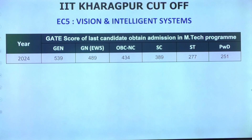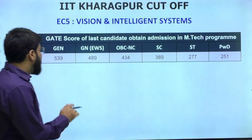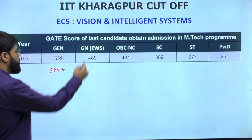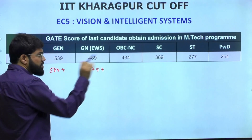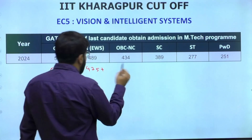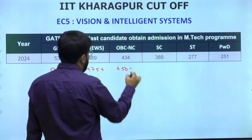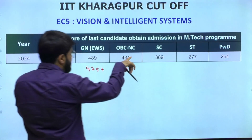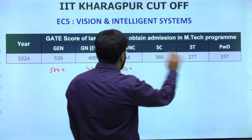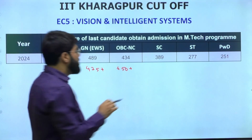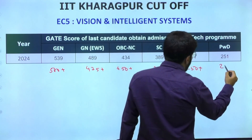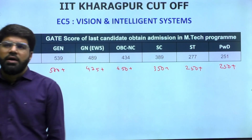The next specialization under EC is EC5 - Vision and Intelligent Systems - offering decent placements. The last year cutoff was 539. Safe score recommendations: General - 500+, EWS - 475+, OBC - 450+ (last year was 434, but there was a large gap between General and OBC which is unusual, so 450+ is safer). SC - 350+, ST - 250+, PWD - 250+.